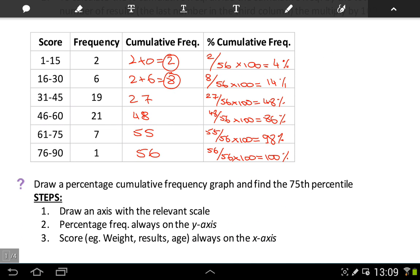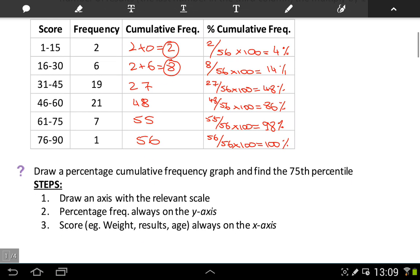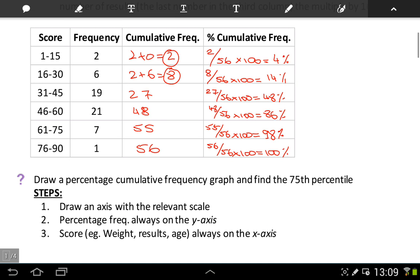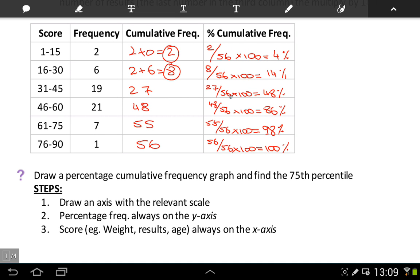Now, let's move on to actually drawing our graph and finding the 75th percentile. The first thing we need to do is draw a graph. Always draw an axis with a relevant scale. A couple of things to remember: your percentage frequency always goes on the y-axis, just like our cumulative frequency went on the y-axis. The score, whatever you may have—weight, results, age, anything—they always go on the x-axis. Remember, we're only using these second numbers here, because we are working with grouped data.